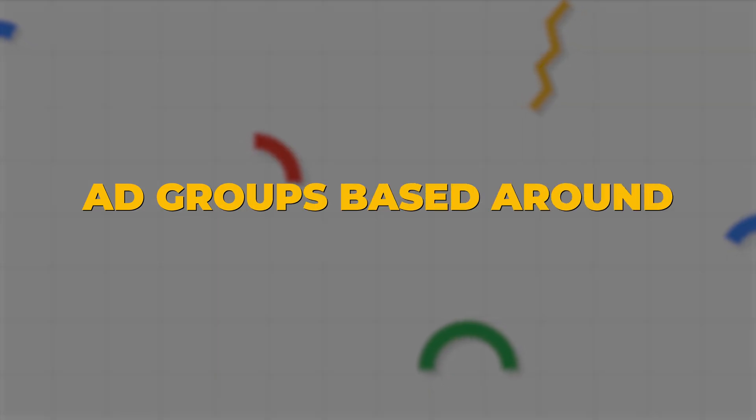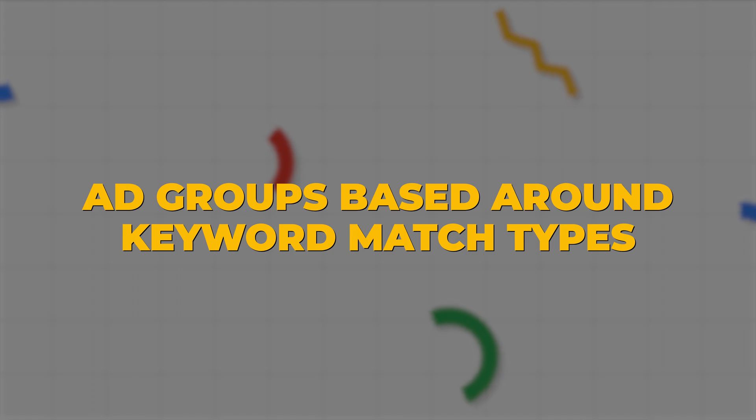The first one is ad groups based around keyword match types. This strategy became really popular in and around 2017, and the reason for why it became popular is because it was working really well at that time. How the strategy would work is that when you came to a keyword theme like baby earmuffs, you would set up three separate ad groups targeting those same group of keywords but in different ways.